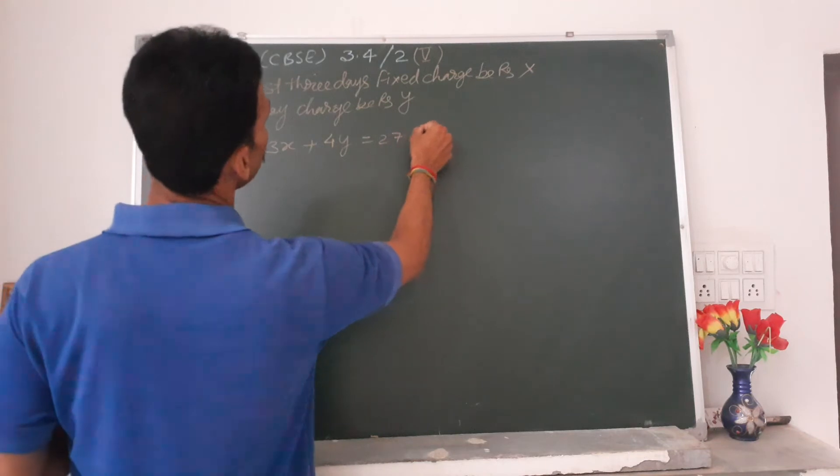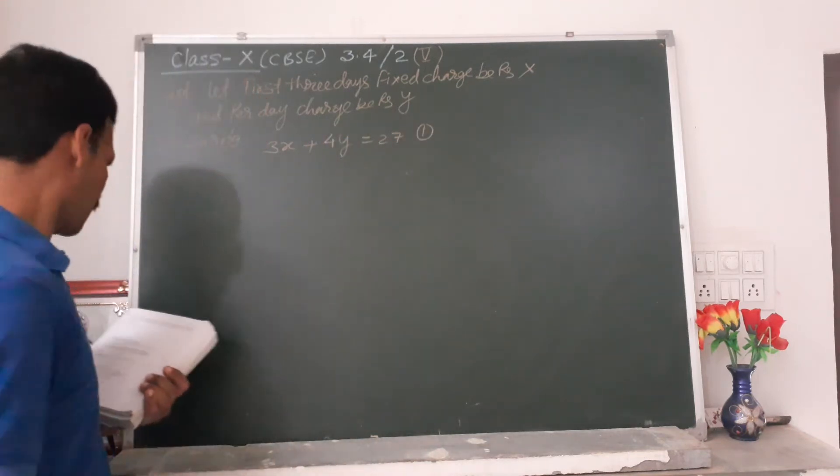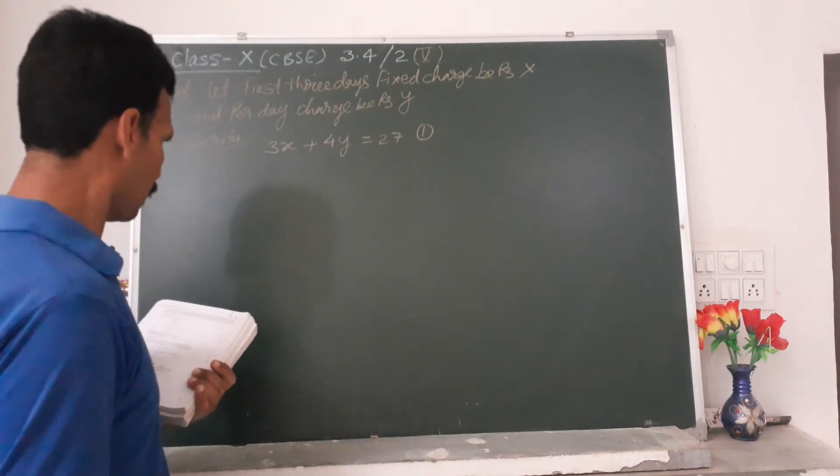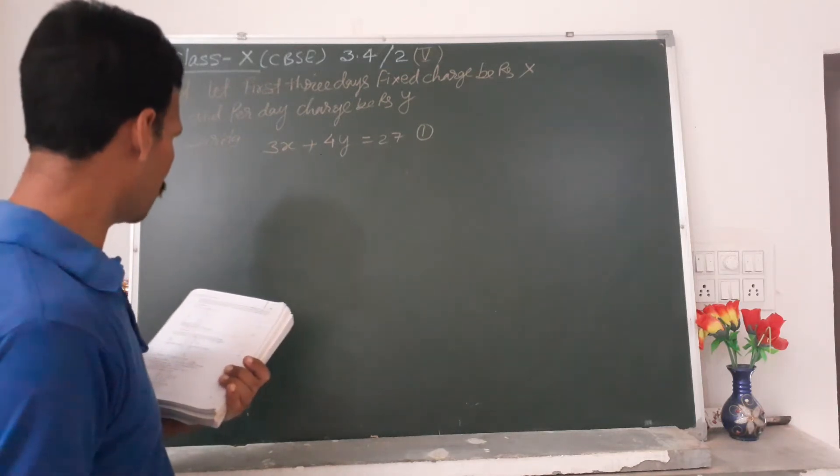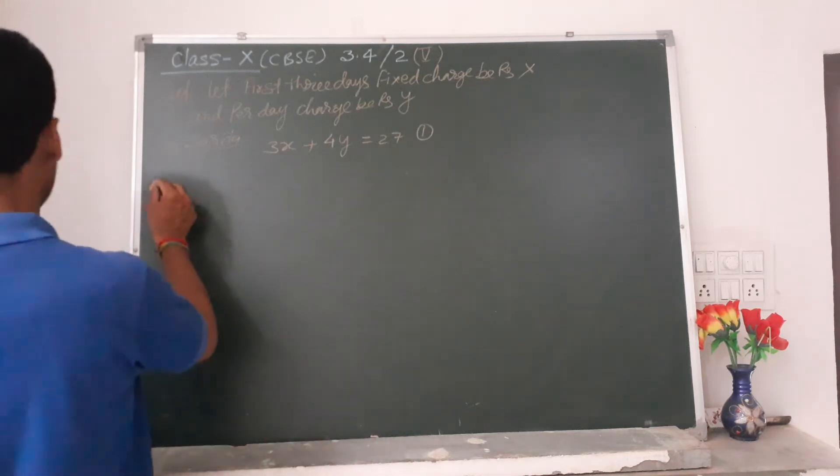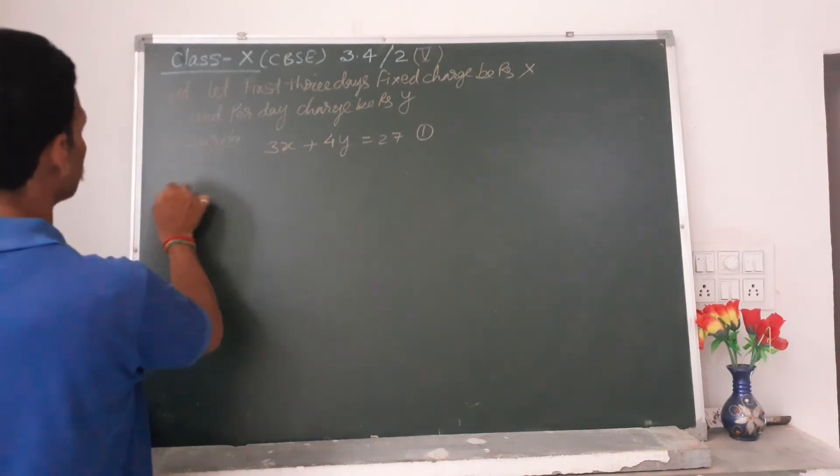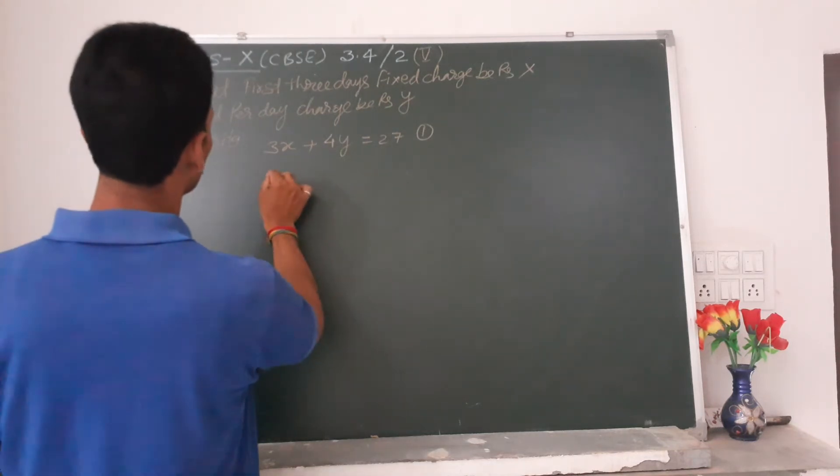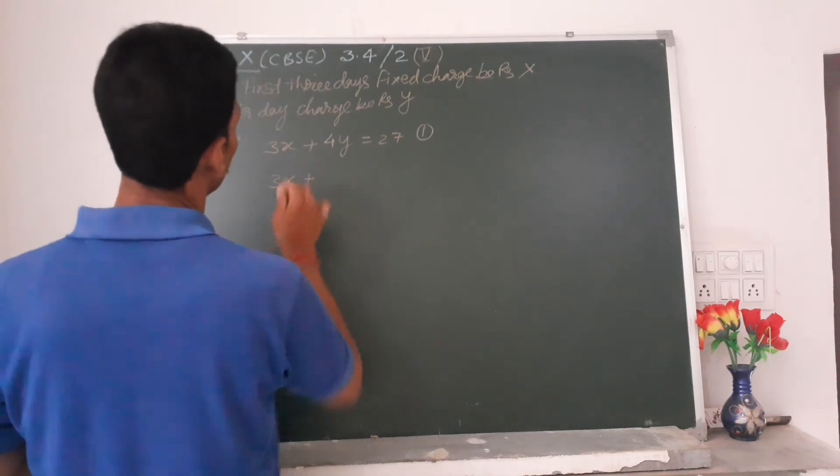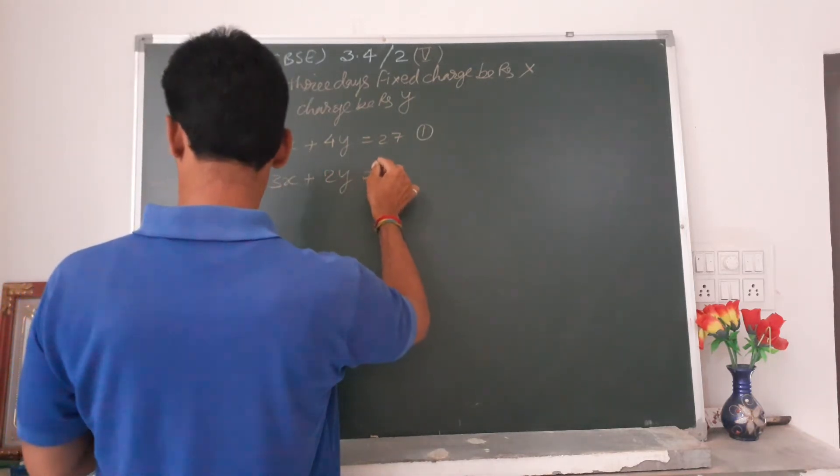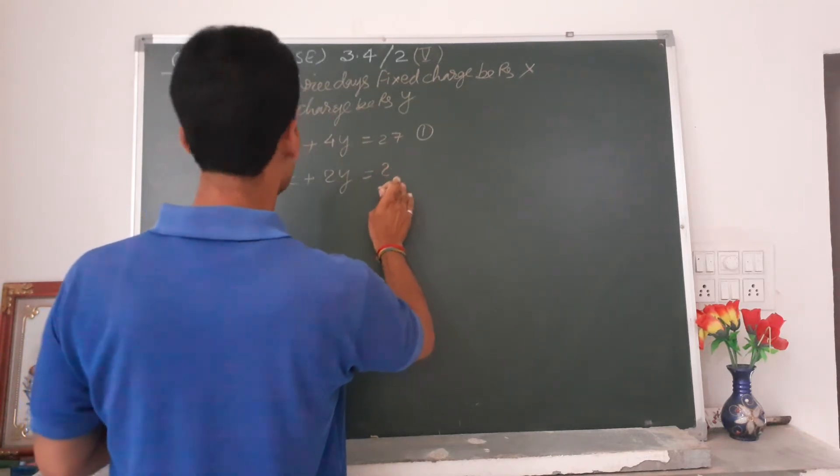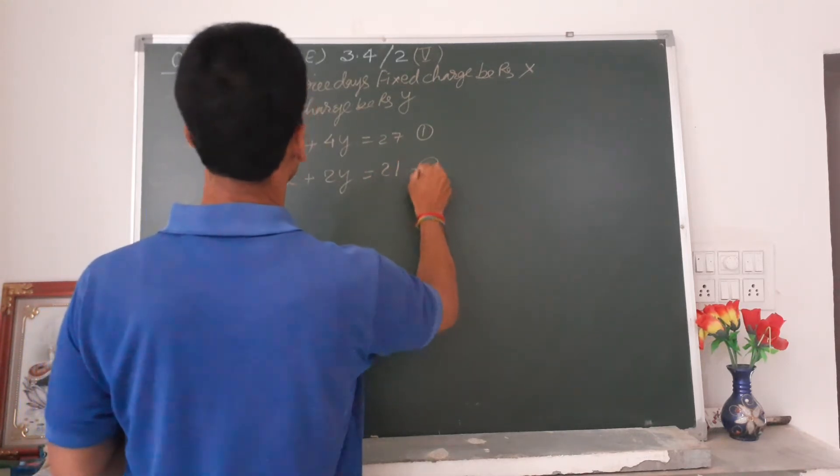And then Sushi paid 21 rupees for the book for five days. Sushi in five days book: 3X, five minus three means 2Y, and payment given is 21. So this is equation number two.